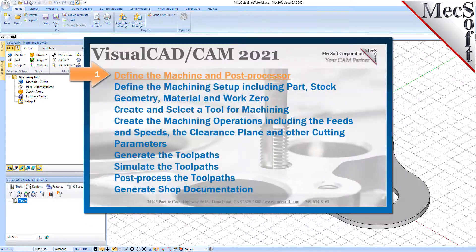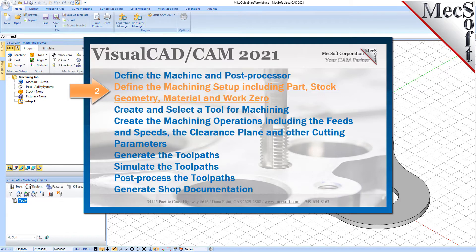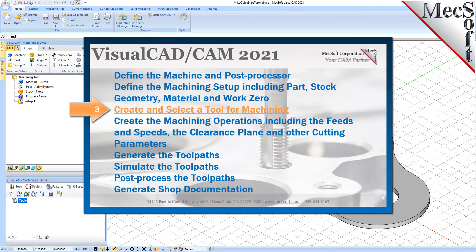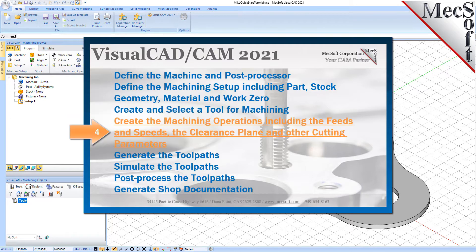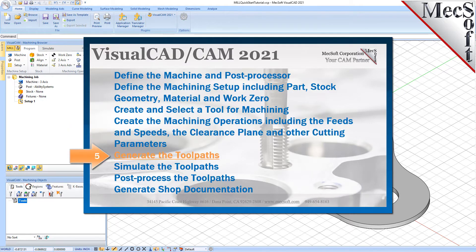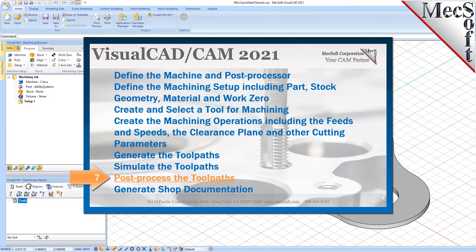We will perform the following basic steps in machining this model. First, we will define the machine and the post processor to use. Then we'll define the machine setup, including the stock geometry, material, and work zero. Then we'll create and select a tool to use for machining. We'll create the machining operations, including the feeds, speeds, the clearance planes, and other cutting parameters. Then we'll generate the toolpaths, simulate the toolpaths, post-process the toolpaths, and then generate shop documentation.